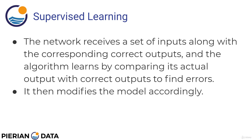So the way this works is: for neural networks, the network is going to receive a set of input data along with the corresponding correct outputs, and then the algorithm or network will learn by comparing its actual output with the correct outputs to find errors. It will then modify the model accordingly, such as adjusting the weights and bias values in the network. Don't worry about those two key terms — we'll discuss those in a lot more detail when we talk about neural network theory.